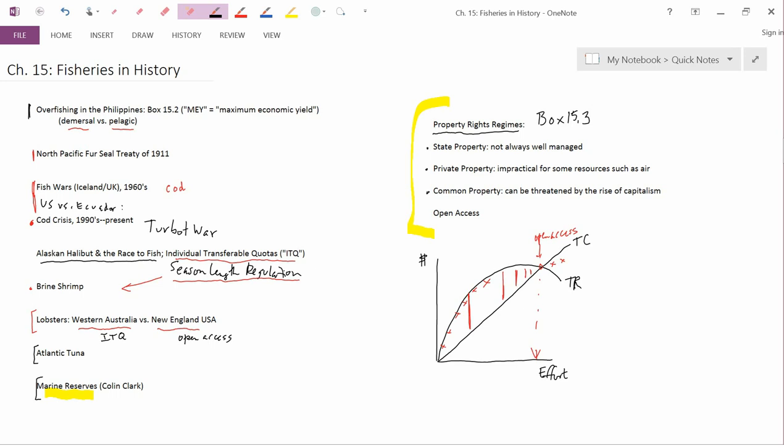Now, I wrote here that can be threatened by the rise of capitalism. Capitalism tends to transform traditional ownership. Often, communal property or common property is transformed into private property. And that can generate externalities, where there were no externalities before. Because with common property, there were no externalities because the entire community owned absolutely everything, and so any potential externalities were internalized.